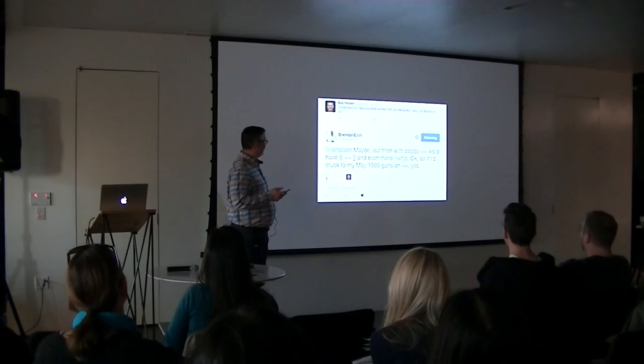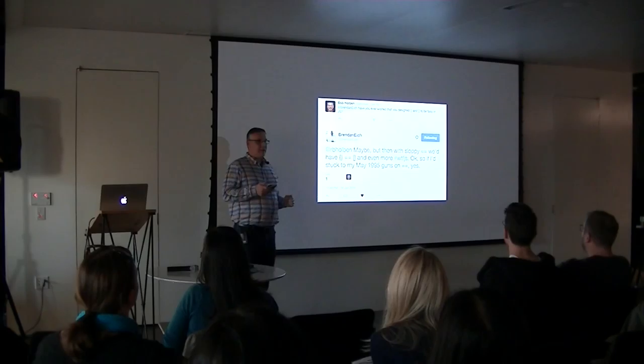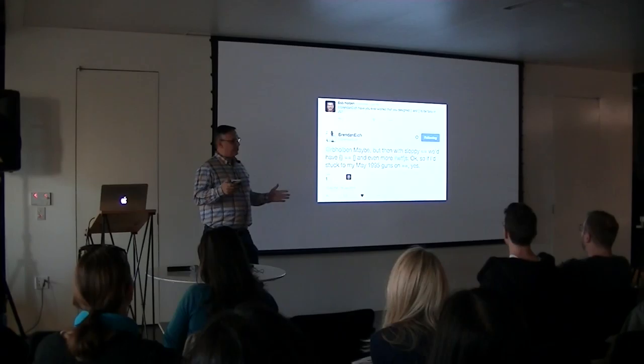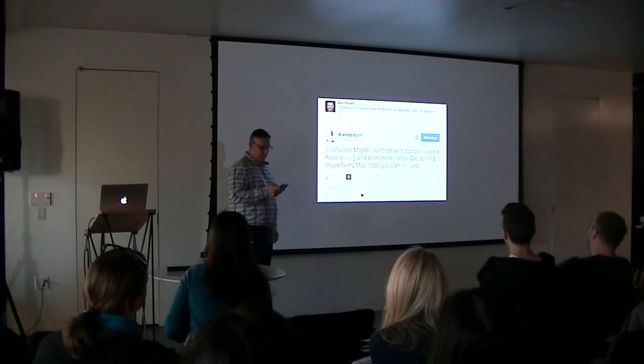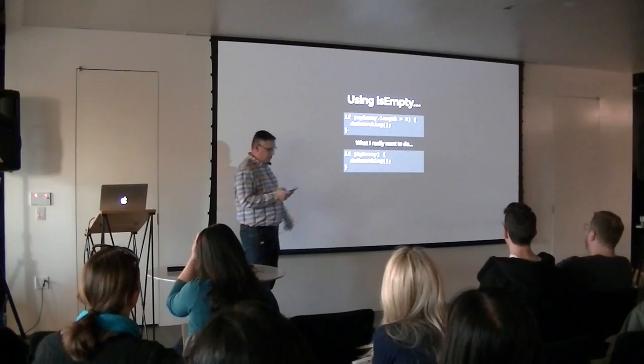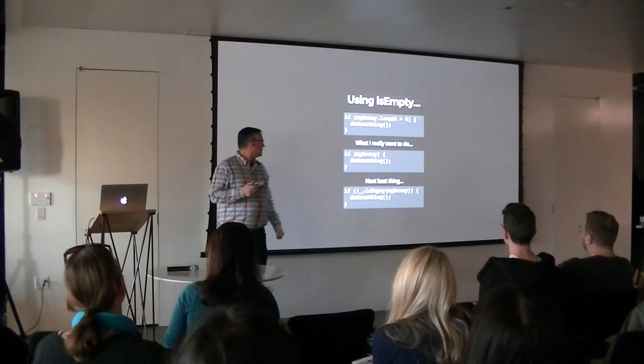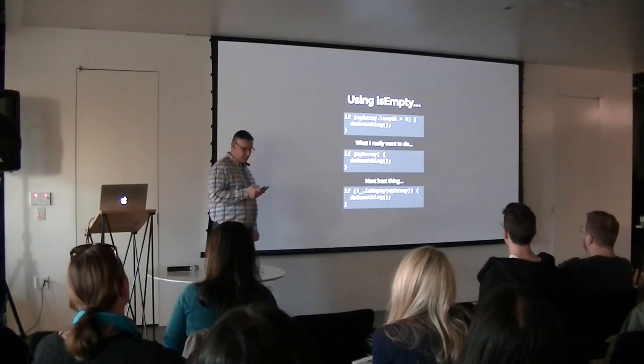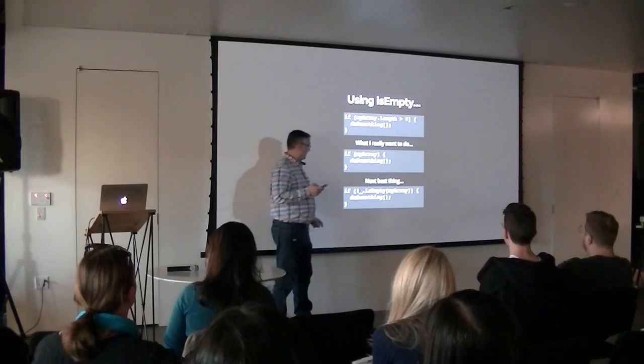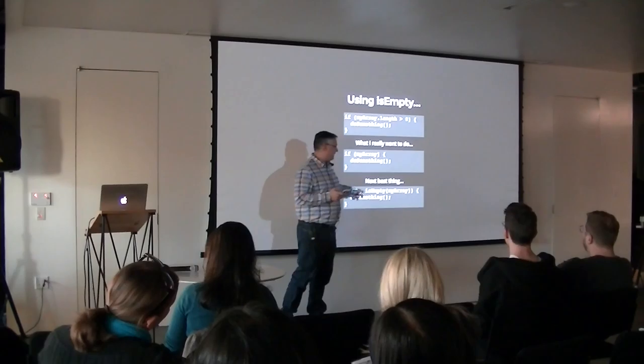I asked Brendan Eich if he ever regretted or wished he had designed those values to be falsy. It was a 140-character answer, but amazingly packed. In the end I'll take that as a yes — he wishes he could have, but couldn't in May 1995 because the wheels were moving forward. They found they had to add the triple equals and he wanted to just replace the double equals, but this is where we are today. So the next best thing is something that's declarative — somebody who doesn't even know JavaScript can look at `_.isEmpty(myArray)` and get a pretty good feel for what it's doing.